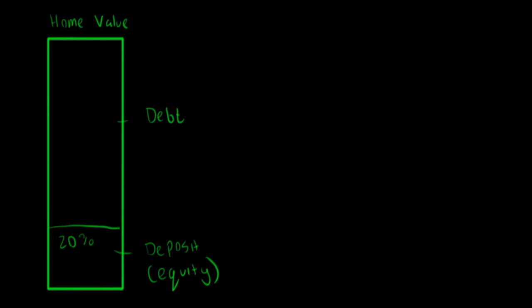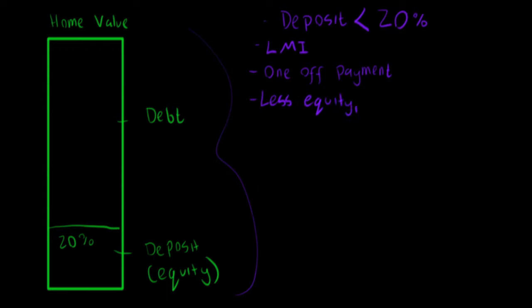a home and they don't have the 20% deposit, a third-party company called a lenders mortgage insurer is able to come to the table to provide Lenders Mortgage Insurance, or LMI. The LMI is a one-off payment, usually added to the mortgage, that is most costly the less equity you have in the property.